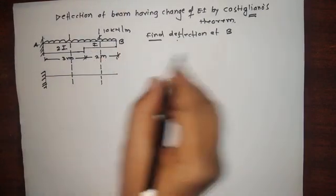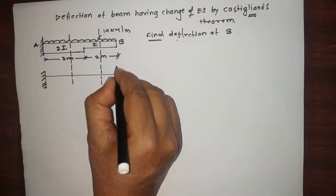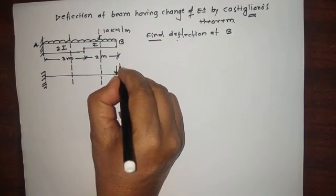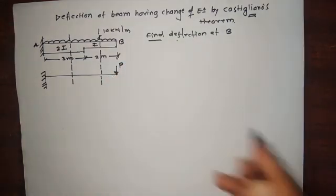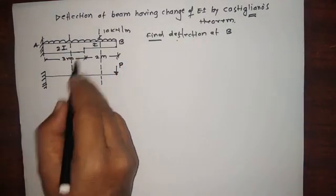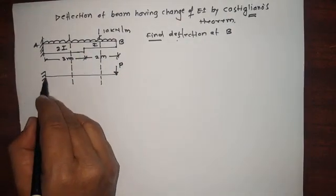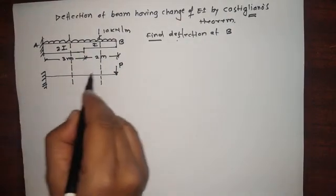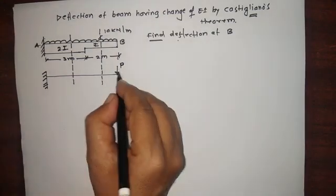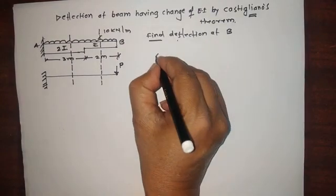The second step is to draw the same beam with the same structure, remove the loads, and apply a unit force P where we desire the deflection. So we apply the force P here. To summarize: first, make sections as per the change of EI; then draw the same beam, remove the loads, and apply the P force where deflection is desired.